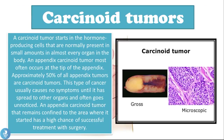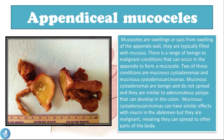Carcinoid tumors start in the hormone-producing cells that are normally present in small amounts in almost every organ in the body. An appendix carcinoid tumor most often occurs at the tip of the appendix. Approximately 50% of all appendix tumors are carcinoid tumors, making them the most common type. This cancer usually causes no symptoms until it has spread to other organs and often goes unnoticed. A carcinoid tumor that remains confined to where it started has a high chance of successful treatment with surgery.